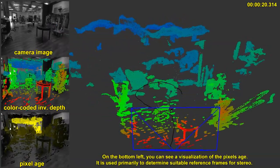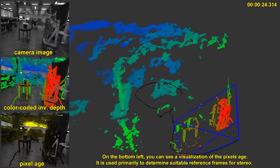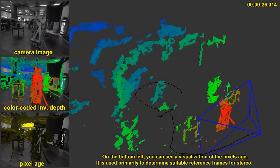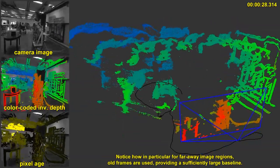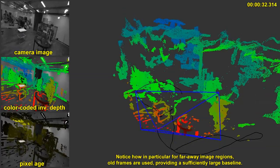On the bottom left you can see a visualization of the pixel's age. It is used primarily to determine suitable reference frames for stereo. Notice how in particular for far away image regions all frames are used, providing a sufficiently large baseline.